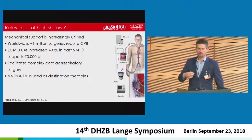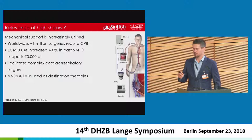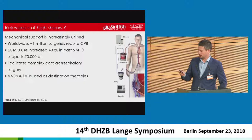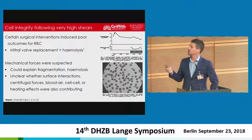This is also important with respect to the increasing use of VADs and total artificial hearts. Previously these were used short term as a bridge to transplant — basically placed in while waiting for a donor heart. But about nine out of ten people waiting for a donor heart will never receive one. Thus these are actually becoming destination therapies in their own right. The question is: how do these high shears influence blood health and therefore blood viscosity?